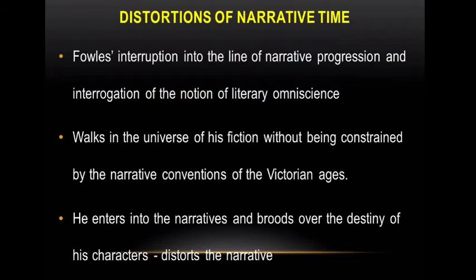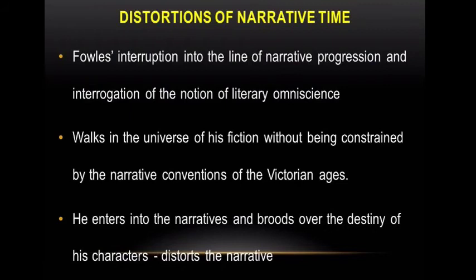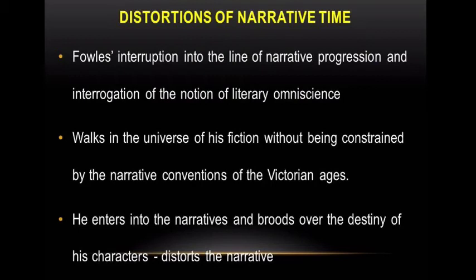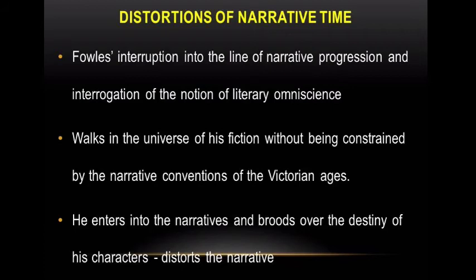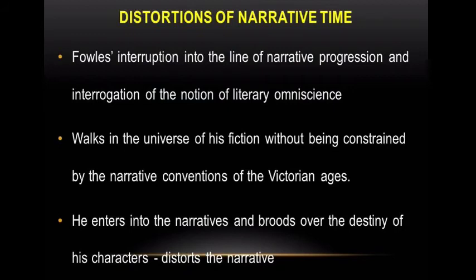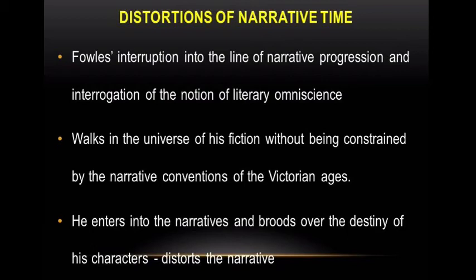The third important experimental device to achieve the subversive goal is the distortion of narrative time. In Chapter 13, Fowles interrupts the line of narrative progression and interrogates the notion of literary omniscience. Fowles asserts he is free to give whatever he likes to his characters, and that he can freely walk in the universe of his fiction without being constrained by the narrative conventions of the Victorian age.